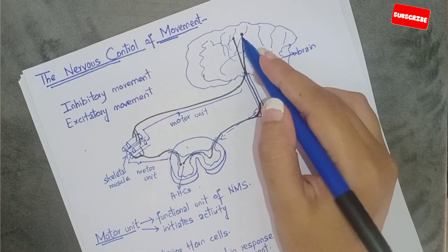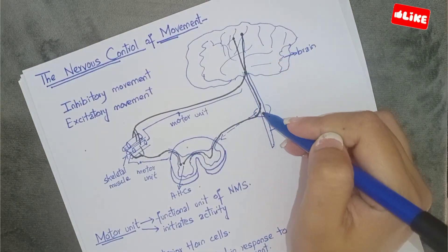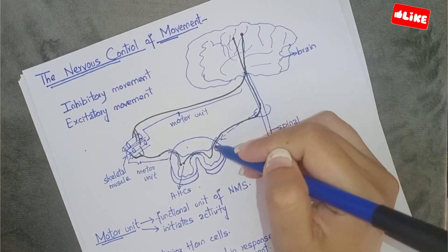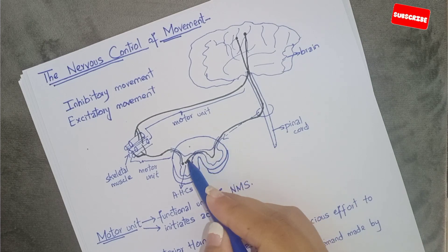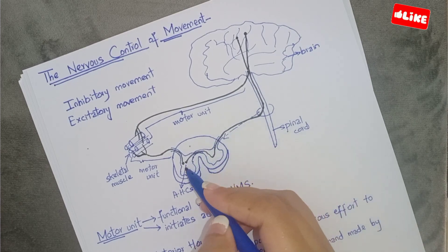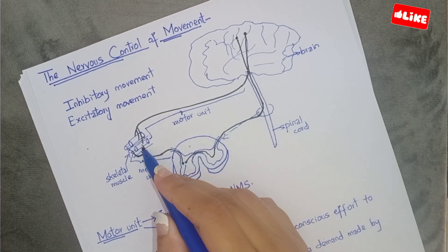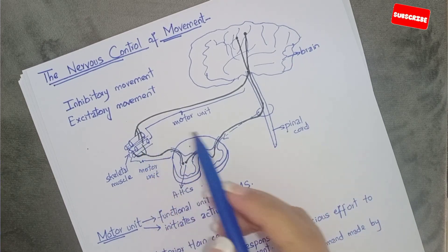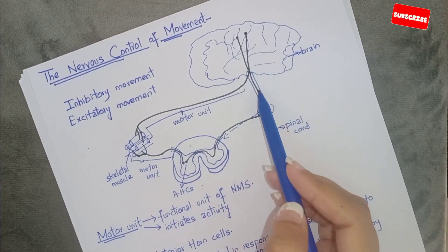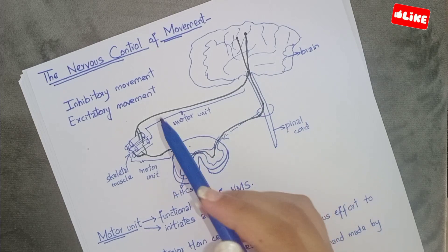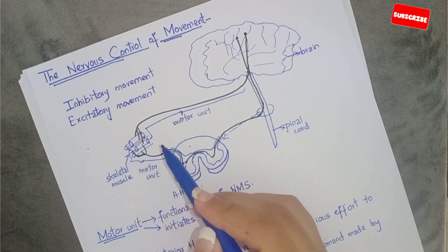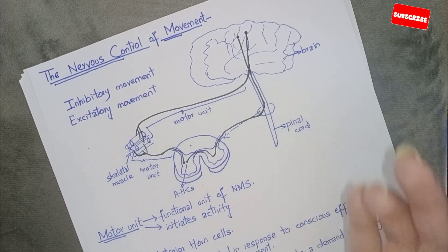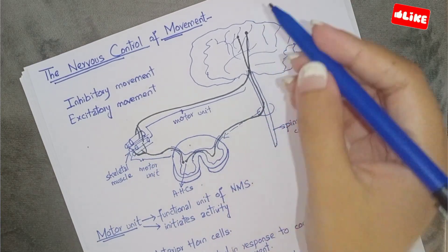There is another nerve — it comes from the spinal cord — and it innervates the muscle fibers. So it is also a single nerve and all the muscle fibers it supplies. That is also called a motor unit.